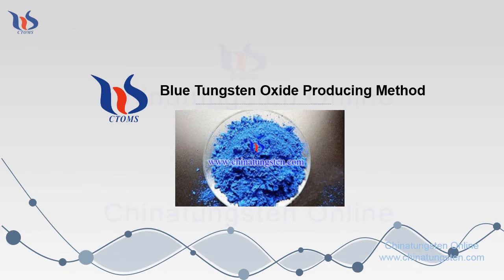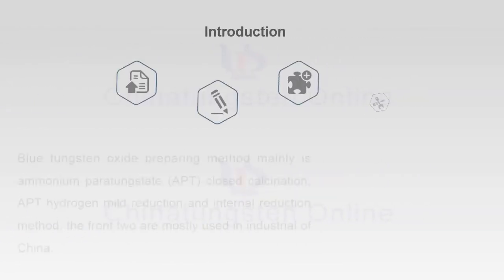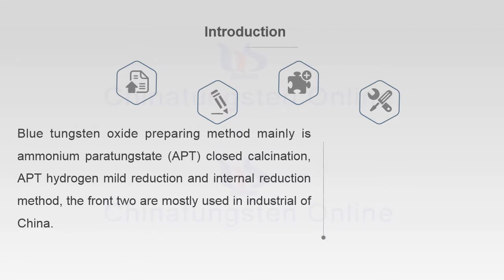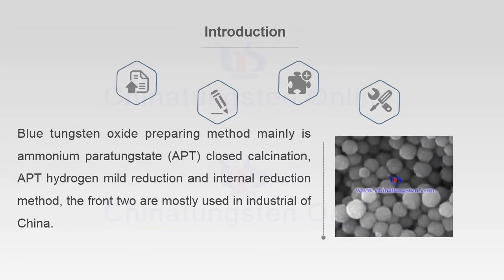Blue Tungsten Oxide producing methods: the preparation method is mainly from Ammonium Paratungstate (APT) through APT Closed Calcination, APT Hydrogen Mild Reduction, and Internal Reduction Method. The first two are mostly used in industry in China.